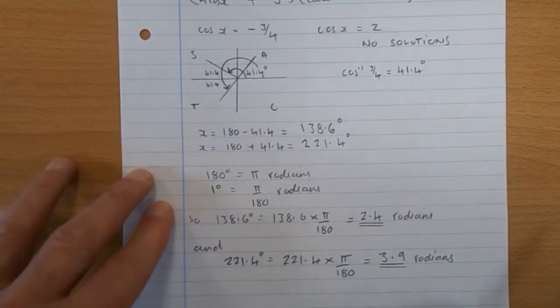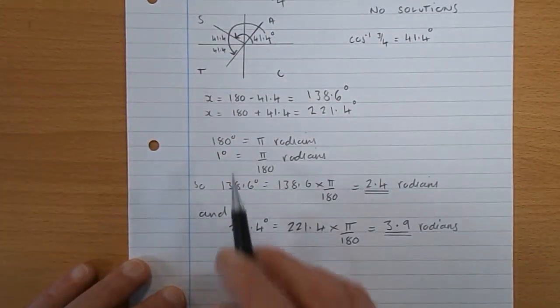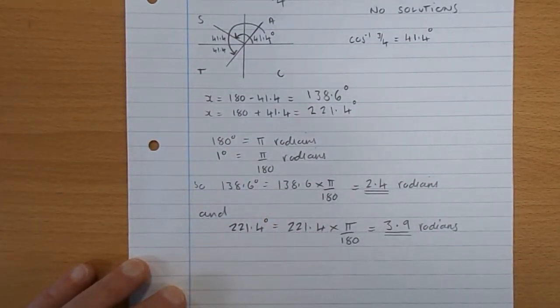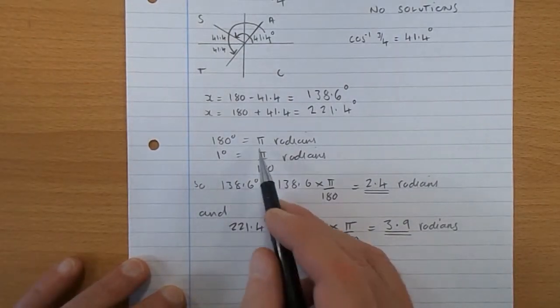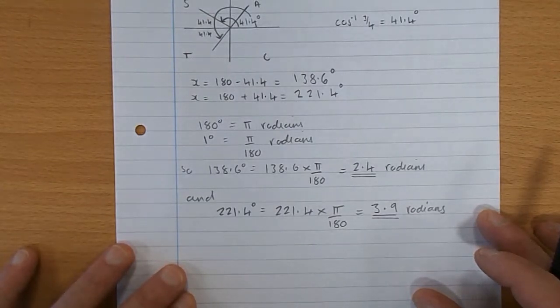Okay, so we have our two solutions. And how do we change them into radians? Well, 180 degrees is π radians, so 1 degree is π over 180 radians. So what was our first one, 138